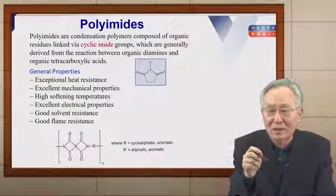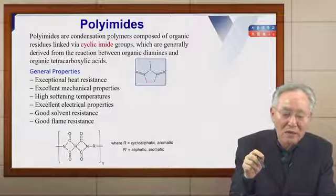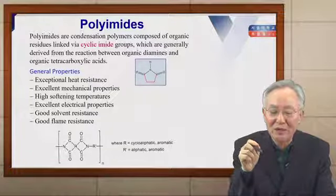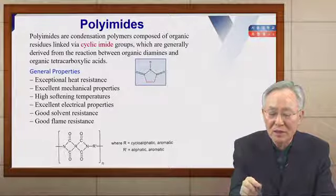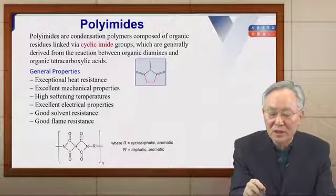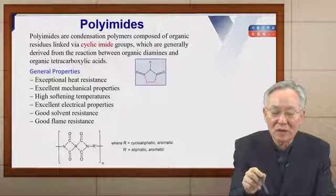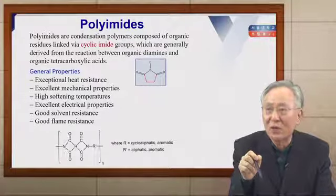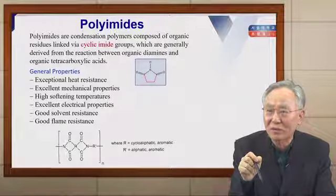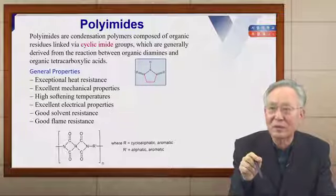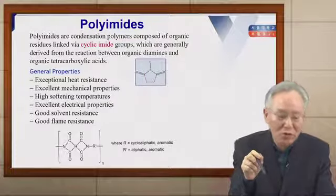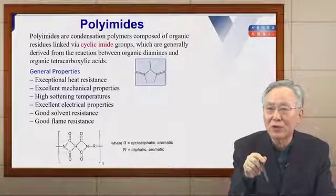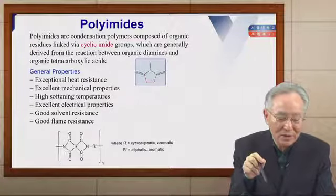The last subject is polyimides. Polyimides are condensation polymers composed of organic residues linked via cyclic imide groups — the CO-NH-CO group cyclized to form a cyclic amide (imide) group. These cyclic imide groups are generally synthesized from reactions between organic diamines and organic tetracarboxylic acids. Polyimides have many excellent properties: exceptional heat resistance, excellent mechanical properties, high softening temperatures, excellent electrical properties, good solvent resistance, and good flame resistance.